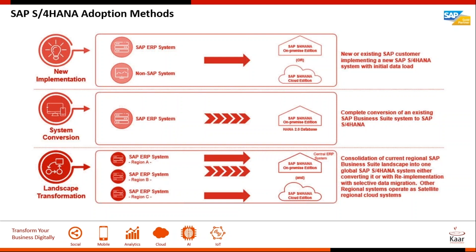System conversion is still a very viable option for customers with an ECC system that's about eight to nine years old, less than three terabytes of data, and fewer than 5000 users. We can still manage to go live within a downtime window of roughly 50 to 56 hours — a little more than a weekend. With S4 HANA 1709, you can still get all the benefits without going for a new implementation.